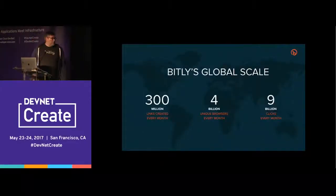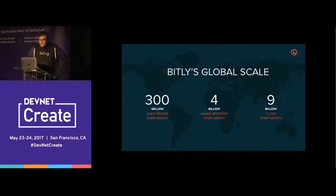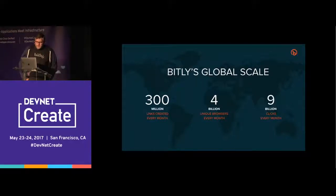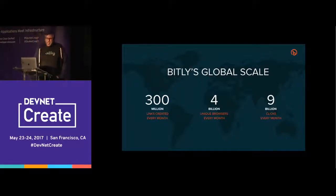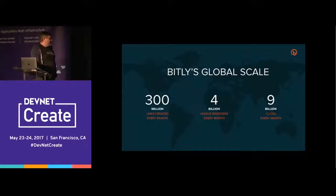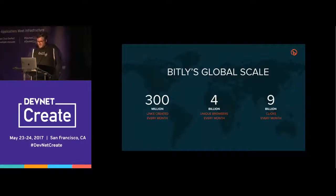Turns out people kind of like this. Every month we see about 300 million shortens, and on that we see about 9 billion clicks from 4 billion unique browsers. So it's a scale where lots of things get interesting — and particularly, it means that if things go down, a few people are going to notice and be upset.